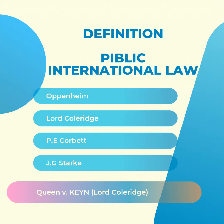In Queen vs King, Lord Coleridge defines international law as the collection of usages which civilized nations agree to observe in their dealings with one another. However, the definition of international law by J.G. Stark is considered to be the most appropriate, for the simple reason that the definition is comprehensive and exhaustive as it reflects the present position of international law.